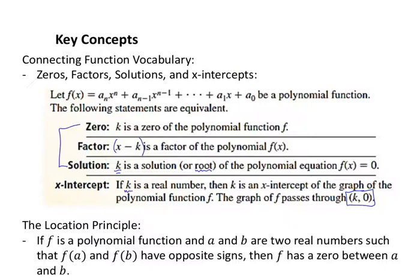The location principle: if we have a table of values with inputs a and b, and they have opposite signs — say f of a is negative 2 and f of b is positive 4 — we know that somewhere between a and b we had to pass through 0 to go from negative 2 up to positive 4, crossing over from negatives to positives. So we know there would be a zero between a and b.